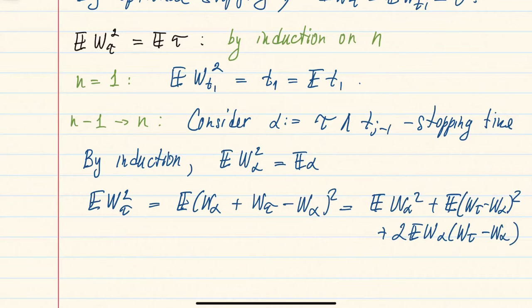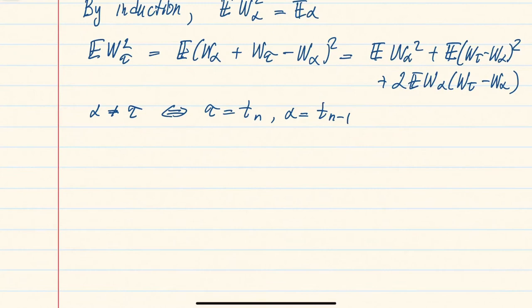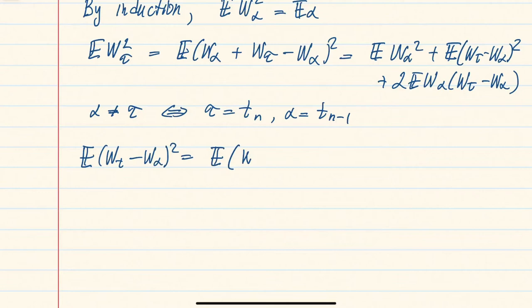The first term is known by induction. We need to compute the second and third terms. The key observation is that α can only differ from τ when τ takes the largest value t_n, in which case α is truncated to t_{n−1}. For all other values τ can take, α equals τ, so the difference is zero. The second term can thus be written as the expectation of the squared increment times the indicator that τ = t_n, and these are non-zero only when τ = t_n and α = t_{n−1}.